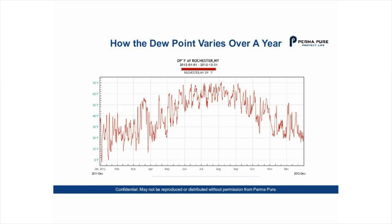Now let's look at this graph, which shows how the dewpoint varies over a year. Many of you are performing experiments or using atmospheric air as a purge gas in some fashion. We can see through this graph how the dewpoint varies at any given place on Earth over a year — this is Rochester, New York, for example. You can see that not only does the dewpoint vary quite drastically within a month, but as the months progress there is a clear trend through the summer. The dewpoint rises through the summer and drops toward winter — a sinusoidal pattern over the course of the year.